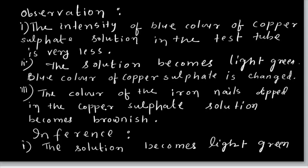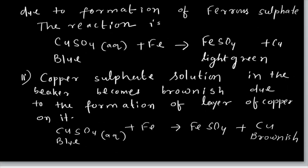The colour of the iron nail dipped in copper sulphate becomes brownish because it changes to ferrous sulphate. Ferrous sulphate is brown in colour. The covering of the iron nails totally becomes brown because ferrous sulphate covers the nails. Now come to the inference.